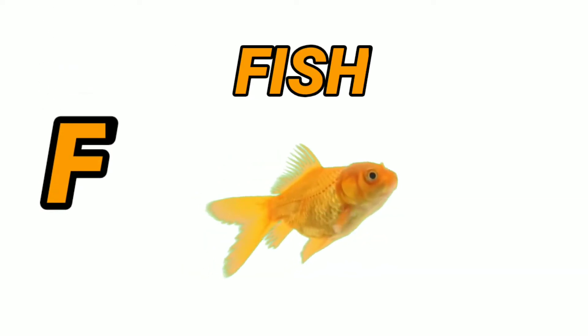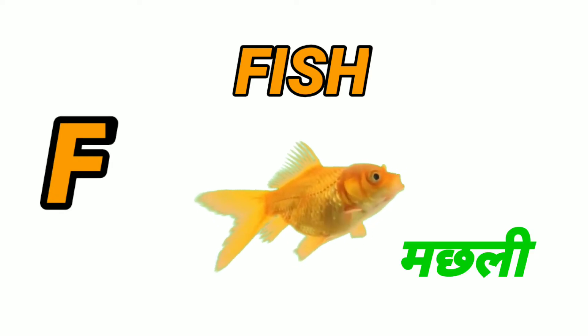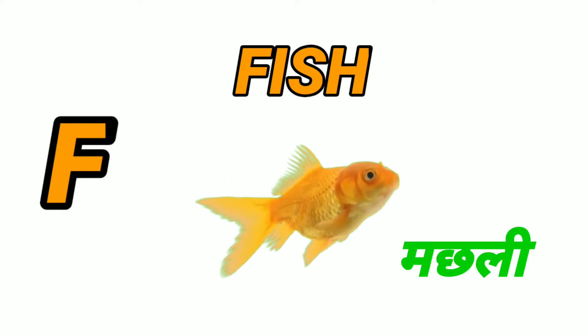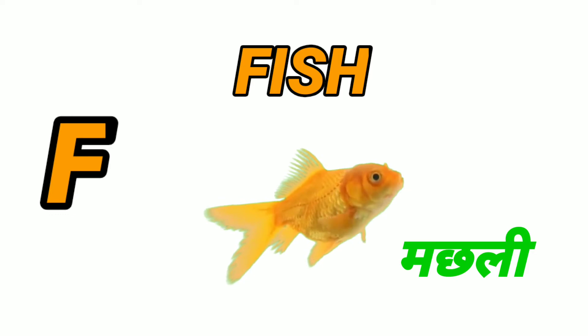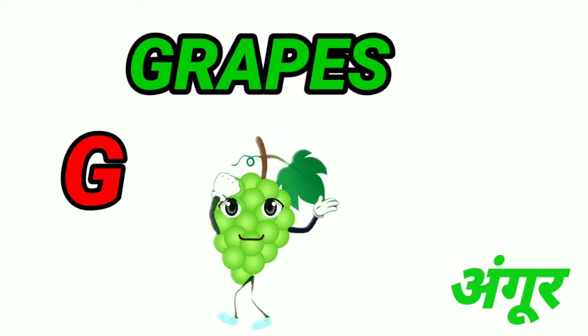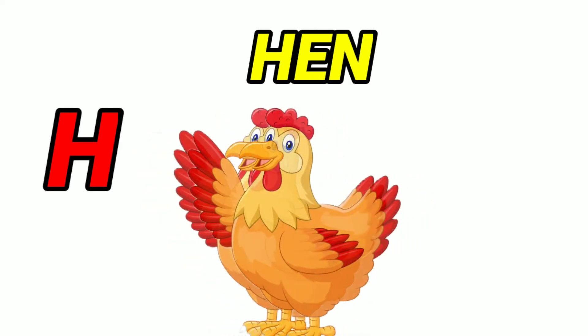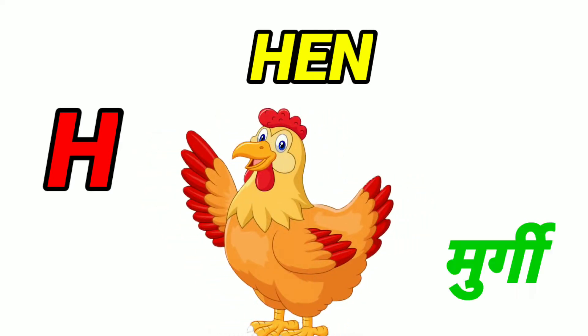F for Fish. Fish means Machli. G for Grapes. Grapes means Angur. H for Hen. Hen means Murgi.